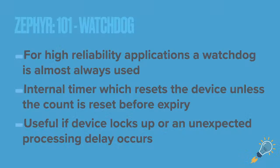For high-reliability applications — things where you want to make sure your processor is never locked up — you generally want to test beforehand, but for the super paranoid, you always want to implement the watchdog. Essentially, a watchdog timer is an internal timer that resets the device unless the internal counter is reset before expiry. It's a safety mechanism to make sure everything's working properly.